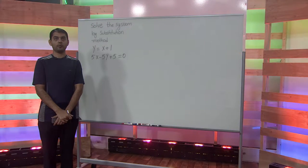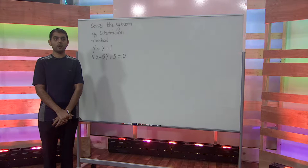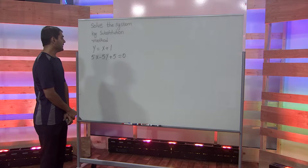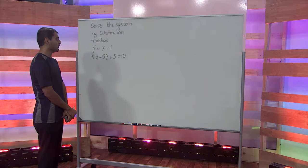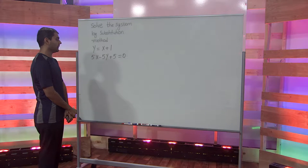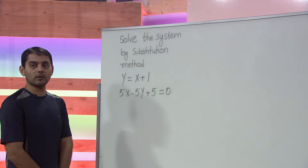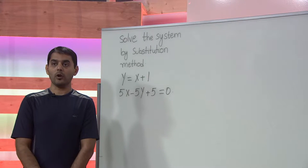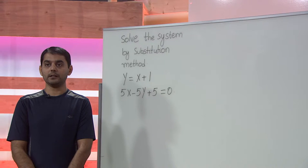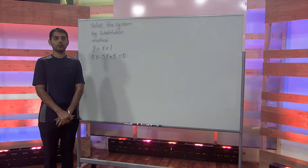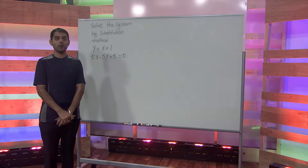In this lecture, we will discuss solving the system of linear equations by the method of substitution. The given system is y equals x plus 1, and 5x minus 5y plus 5 equals 0. The goal of this problem is to find the values of x and y, and to do so we use the method of substitution.